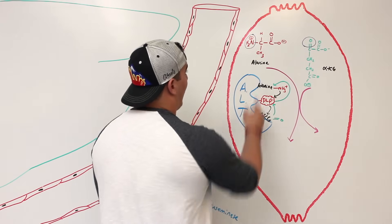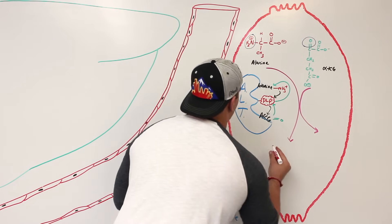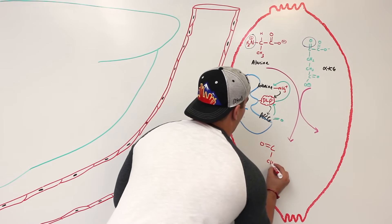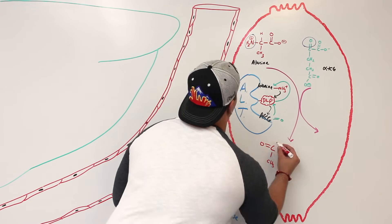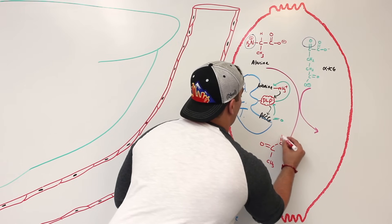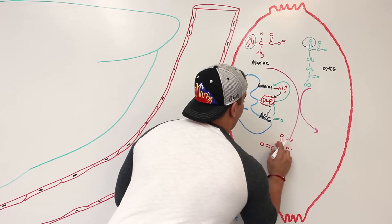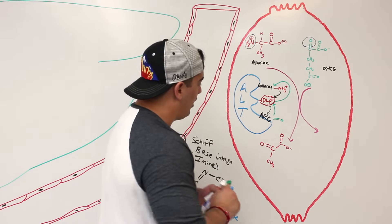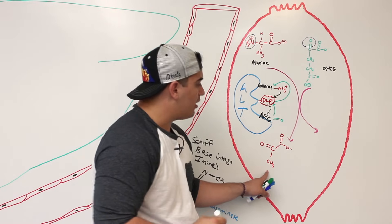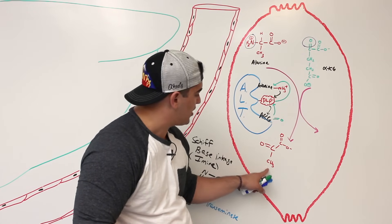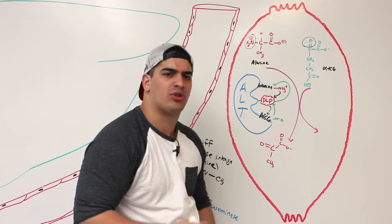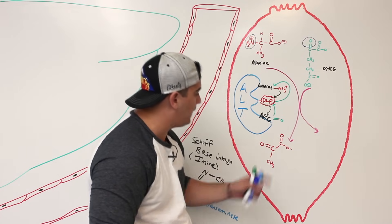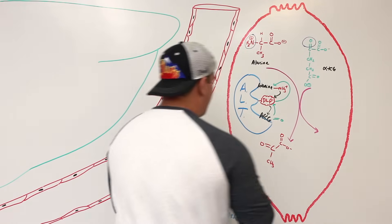Look what happens to the alanine now — it has a double bond oxygen and a methyl group, and then a carbon double bond oxygen on the other end. If you know your biochemistry structures, this right here is pyruvate — one, two, three carbons. This is specifically pyruvate.